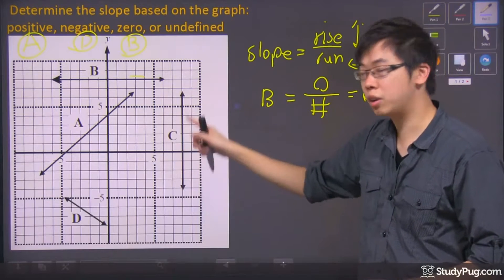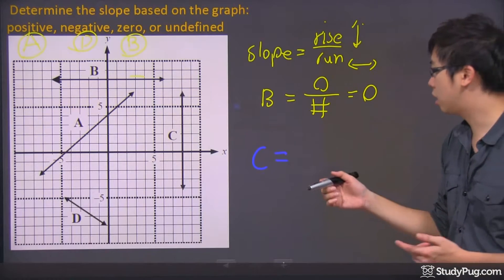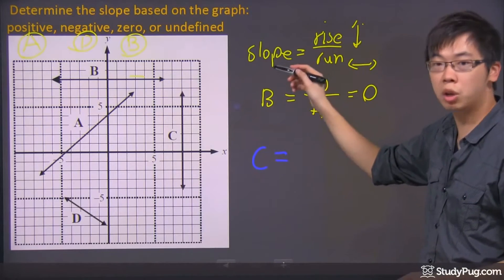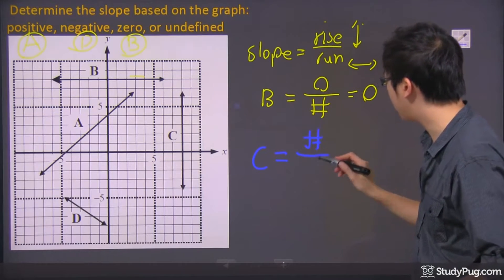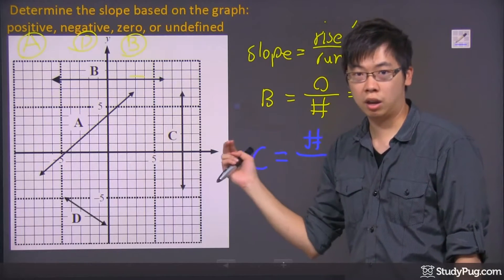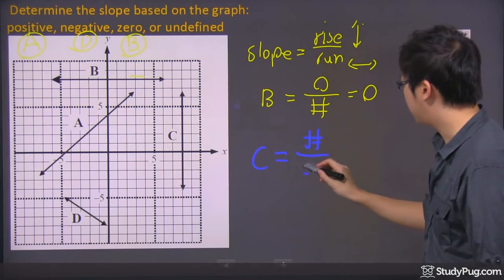So for C over here, let's take a look. For C, you're actually taking some number in terms of the rise, right? Remember, the slope is just rise over run. So there's a number for the rise. However, you don't have anything for the run at all because the graph is going straight up and straight down. So there is a zero right here.